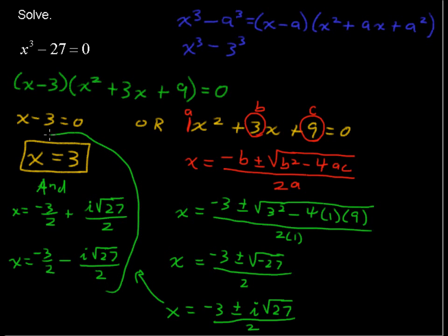So we have our three solutions, one real number solution and two complex number solutions to that factorable cubic equation.